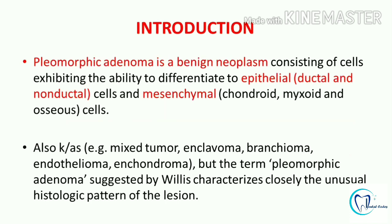Starting with the introduction: Pleomorphic Adenoma is a benign neoplasm. This tumour has the ability to differentiate into both epithelial as well as mesenchymal cells. The epithelial cells can further differentiate into ductal and non-ductal components. In the ductal component, it will form ducts, pseudocysts, and pseudoducts. In non-ductal cases, it will form sheets, strands, and cords. When we talk about mesenchymal cells, it will give rise to a stromal background which could be chondroid, myxoid, or osseous.